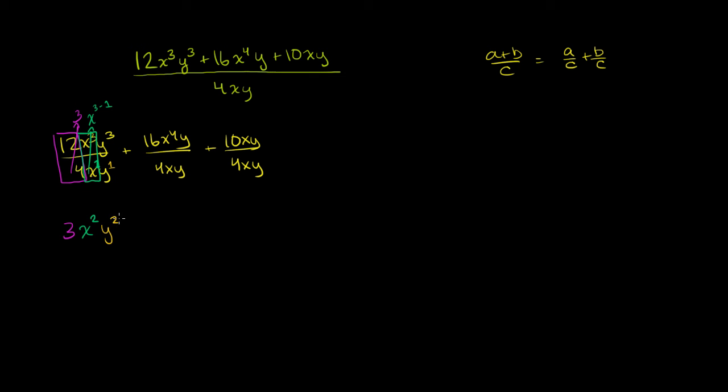Now let's do the next term. Plus, we have 16 over 4. 16 over 4 is just 4. Then we have x to the fourth over x. Well, once again, x is the same thing as x to the first. So this is going to be x to the 4 minus 1, or x to the third power. And then finally,